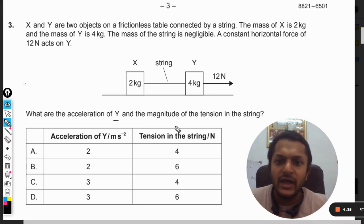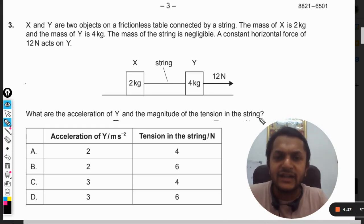What are the accelerations of Y and the magnitude of tension in the string? Very well, so first of all they are asking about the acceleration of Y. The point to be noted here is that mass X and mass Y, they are tied together with a string.